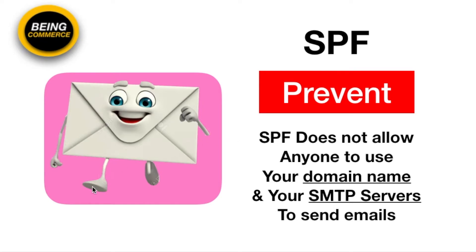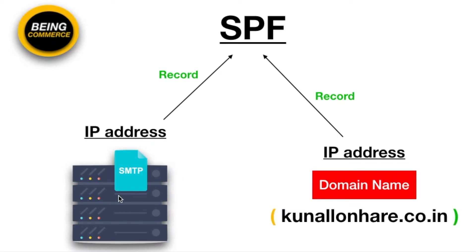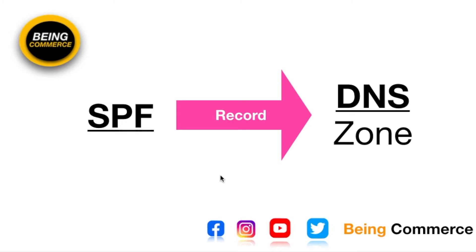It's very easy. Every SMTP server has one unique IP address, and likewise your domain name also has one unique IP address. What we need to do is simply record our SMTP server IP address to SPF, and also record our domain name IP address to SPF. After that, we have to record that same SPF to our DNS zone configuration, and when you do this your attacks will be over — you will have successfully configured your SPF records to your DNS zone.